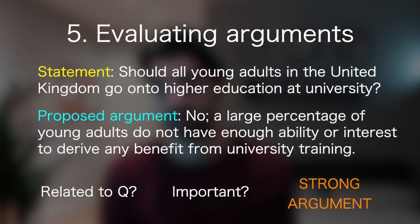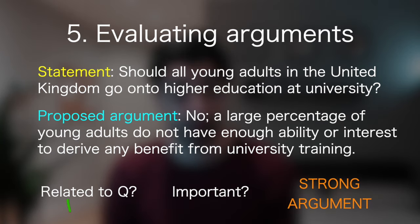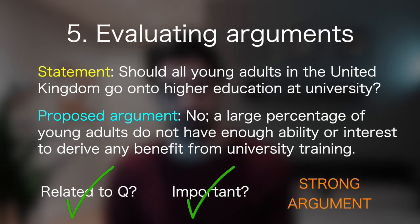Another proposed argument could be: no, a large percentage of young adults do not have enough ability or interest to derive any benefit from university training. Here, the argument is related to the question because it's talking about university and it is relevant. And secondly, it is quite important — it's talking about students' interests and ability to get the benefit out of going to university. So this second one ticks both boxes and would be considered a strong argument. One thing to note is that you need to ignore your own views. You're just assessing whether an argument is strong or weak — that doesn't mean you agree or disagree with it.